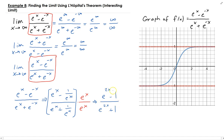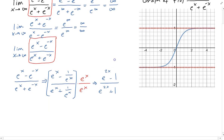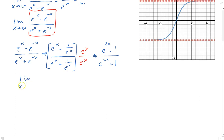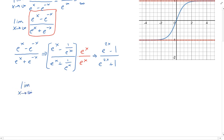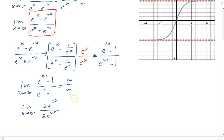Now let's work on this part. So the limit as x approaches infinity of e to the 2x minus 1 divided by e to the 2x plus 1. Again, we're going to get infinity over infinity, so we need to apply L'Hôpital's rule. Taking the derivative of the top and bottom, we get 2e to the 2x divided by 2e to the 2x. Then, as x approaches infinity, the e to the 2x terms cancel out.